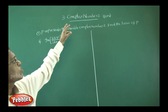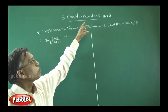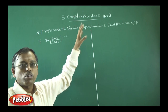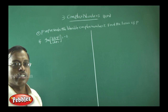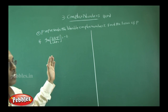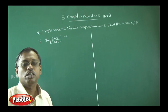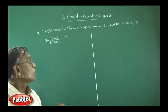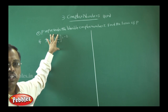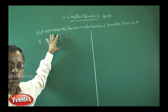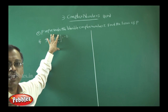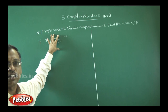We will discuss the third chapter, Complex Numbers, focusing on 10-mark problems. In total, we have 16 ten-mark problems in complex numbers. First, we will see the locus model. In this model, we have 5 problems, and I will explain them one by one.